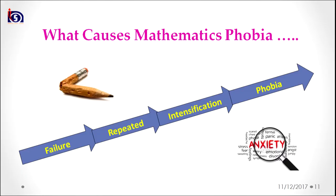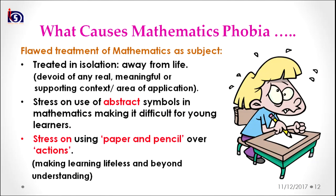What causes maths phobia? Maths phobia is caused mainly due to persistent, repeated failure in mathematics, which intensifies the feeling of discomfort and results in phobia. The flawed treatment of mathematics as a subject at school level has made it a phobic subject for children. Maths is always treated in isolation — made away from life and divided from any real, meaningful, or supporting context. Therefore, children lack the ability to apply mathematical concepts in their lives, leading to feelings of discomfort.